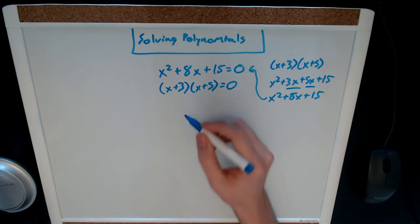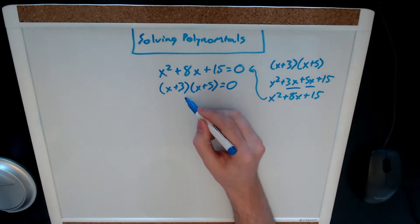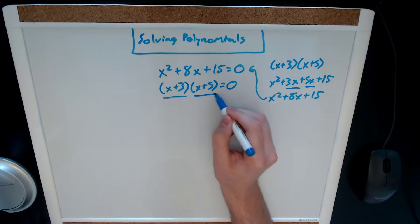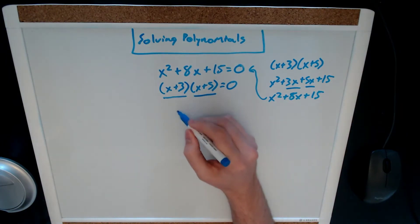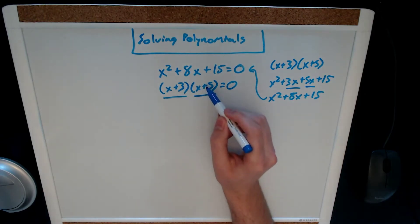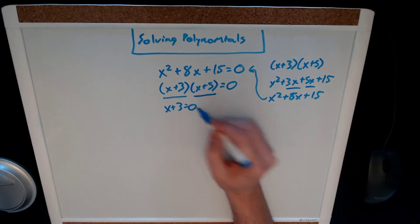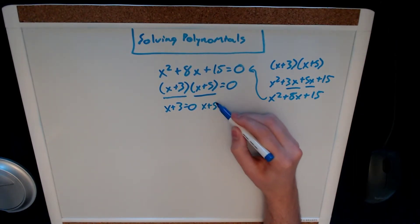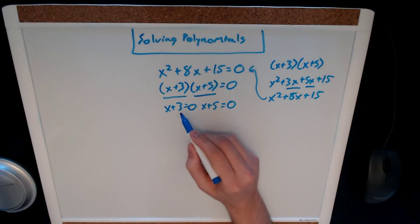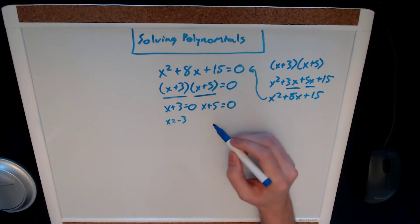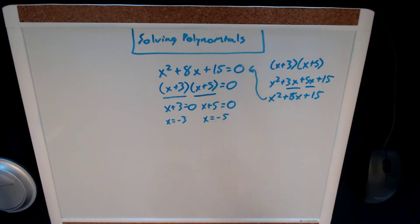So instead of taking just a number as a value, we can recognize that x plus 3 and x plus 5 are each their independent values here. And if we multiplied either of them by zero we would get zero. So we can set both of them equal to zero and solve to find our two values. In this case we would subtract 3 from both sides and get x equals negative 3. And in this case we would subtract 5 from both sides and get x equals negative 5.